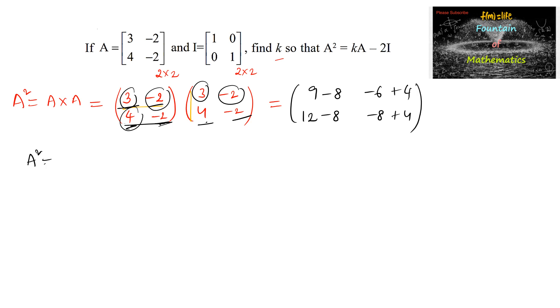So we've got A squared matrix as 9 minus 8 is 1, minus 6 plus 4 is negative 2, and 12 minus 8 is 4, and minus 8 plus 4 is negative 4.